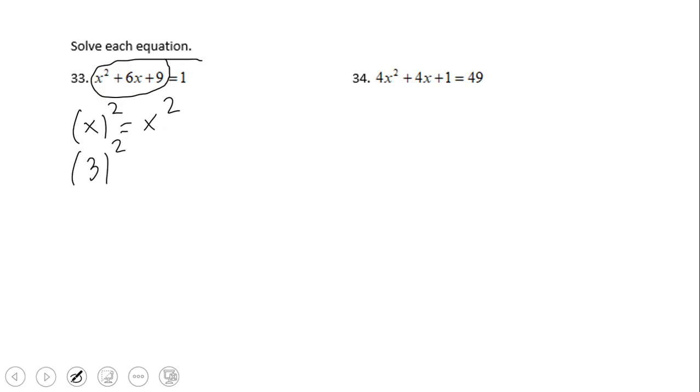3 squared is 9, and obviously that 6x is the product of 2 times 3 times x, that is 6x. So these, if you remember, are the three conditions for having a perfect square, which we have.